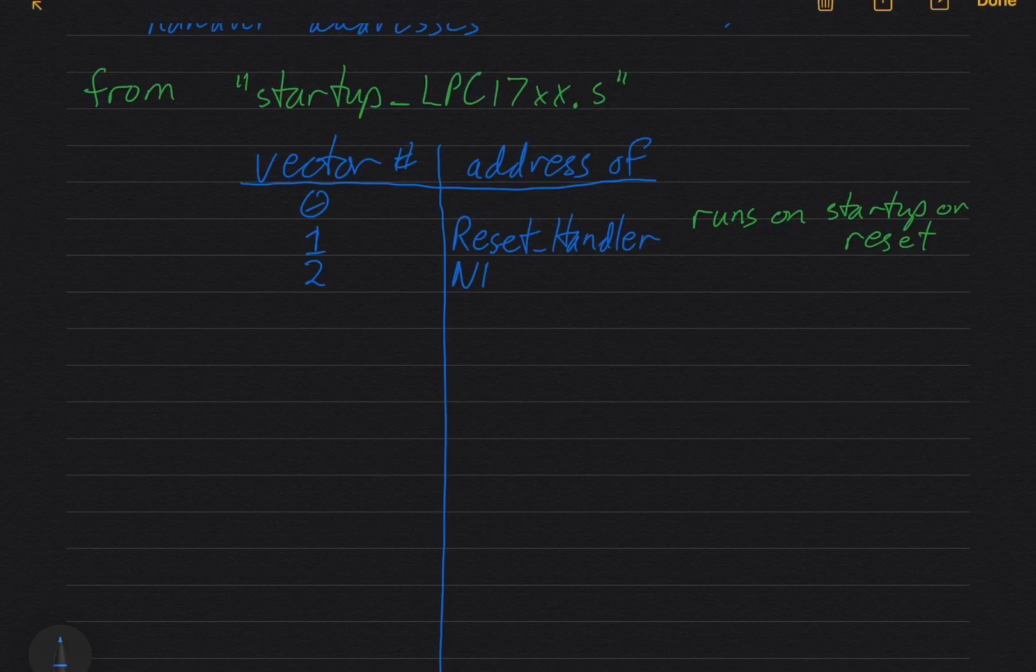Vector number two is the NMI handler, the non-maskable interrupt handler. If you look in this assembly file, you'll see that the body of the NMI handler looks like this: the body is just B dot. This is assembly language, B is an unconditional branch, and the dot means branch to the same line. If you think about that, there is an analog in C, which is the infinite loop doing nothing, something like while one, and then the loop body is a semicolon.